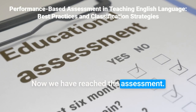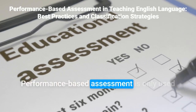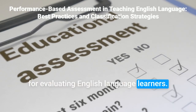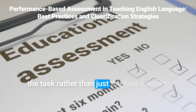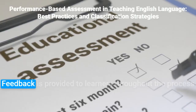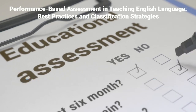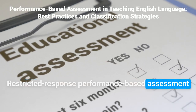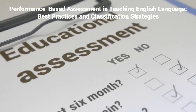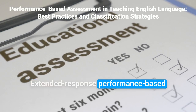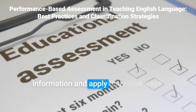Now we have reached the assessment. Part 1: True or False with Justification. 1. Performance-based assessment is only used for evaluating English language learners. 2. The focus of product-oriented performance-based assessment is on the learner's approach to the task rather than just the final product. 3. Feedback is provided to learners throughout the process in product-oriented performance-based assessment. 4. Restricted response performance-based assessment requires learners to complete a more open-ended task that allows for multiple approaches and outcomes. 5. Extended response performance-based assessment typically measures learners' ability to analyze, synthesize, and evaluate information and apply it in novel ways.